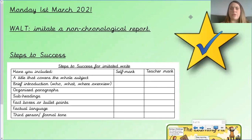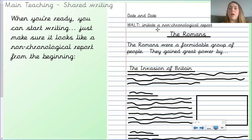Let's have a look at what you need to achieve today. So, you've already done your long day and your walt. These are our steps to success. I provided you with this table in your daily planning today. So, you need to make sure that you include a title that covers the whole subject, a brief introduction, organised paragraphs, subheadings, fact boxes or bullet points, factual language, and that you write in the third person in a formal tone.